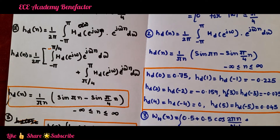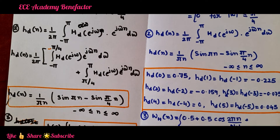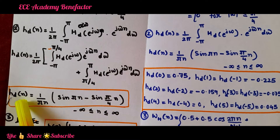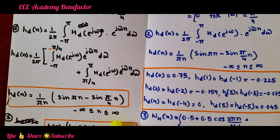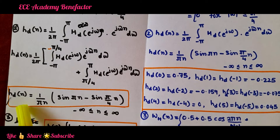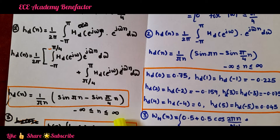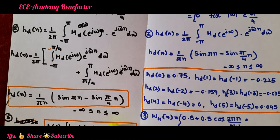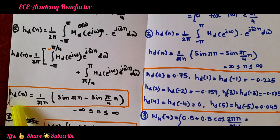On solving, h_d(n) is obtained as (1/πn)[sin(πn) - sin(π/4 · n)], where n varies between minus infinity to infinity. This filter coefficient is of infinite nature, and since we are designing a FIR filter — a finite impulse response filter — the filter coefficient or desired impulse response must be of finite nature.